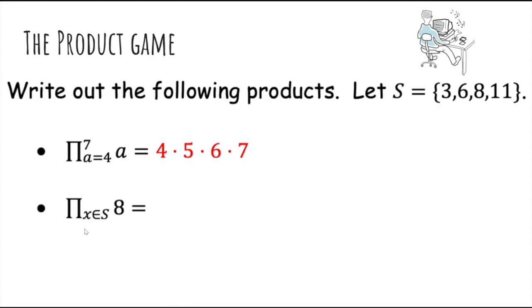Then, what about product of x in s of 8? Well, for every element in s, we loop through all of them, and then we produce an 8 term in the product, so that's just 8 repeated for each element in s.